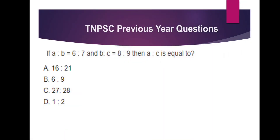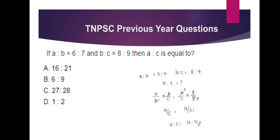A is to B as 6 is to 7. B is to C as 8 is to 9. Find A is to C. You can use A to B and A to C. The method: A/B × B/C = A/C. A/B × B/C = 6/7 × 8/9. The B's cancel out, so A/C = 6×8 / 7×9. Then substitute into c² − a² divided by c² + a². We get a/c, then substitute for the answer: 7 by 25, option B.